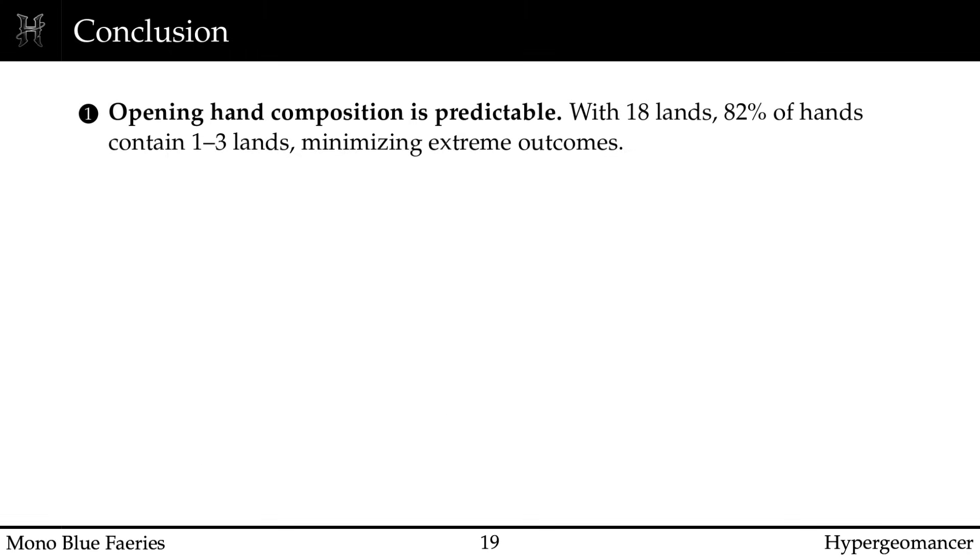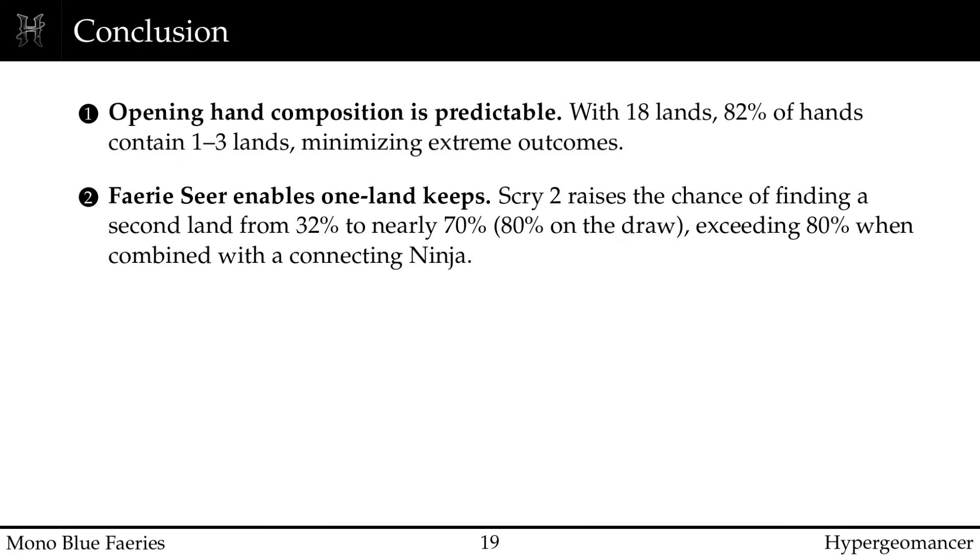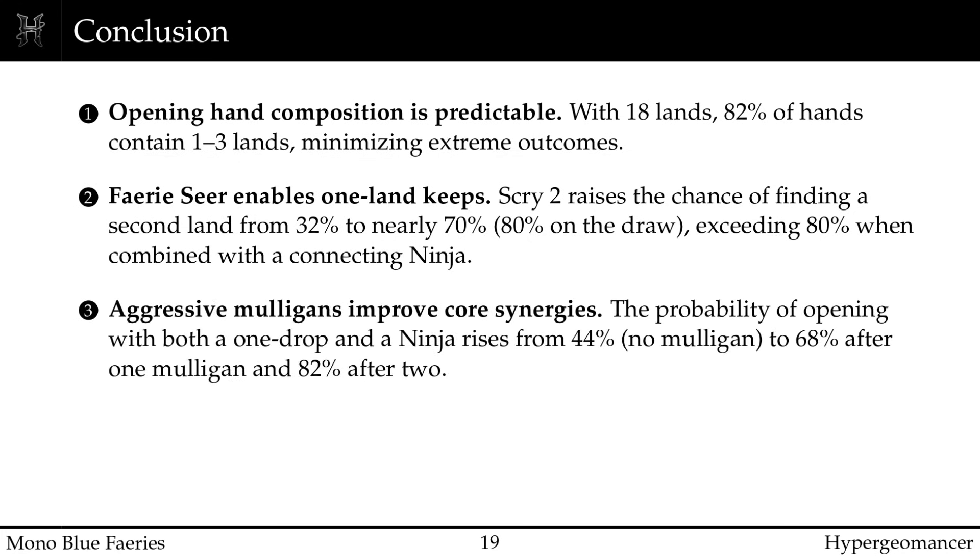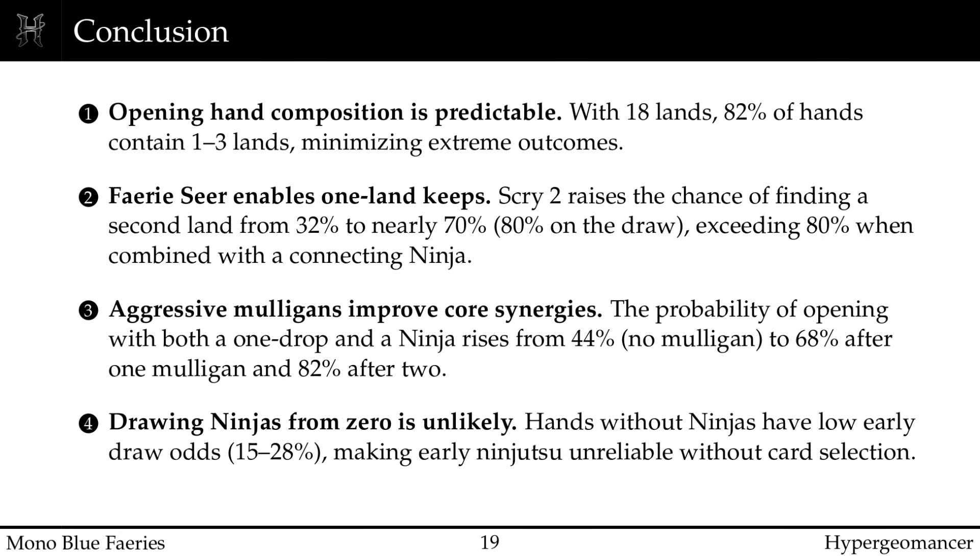Let's bring everything together. We've established that 18 lands provides optimal balance, giving you playable hands while minimizing extreme outcomes. We've seen that 16 to 18 one-drops maximizes consistency without sacrificing your interaction suite. We've learned that 1 land hands aren't the trap they seem, if they contain Faerie Seer. The scry 2 ability transforms a 32% gamble into a 70% probability of finding your second land on the play and 80% on the draw. We've discovered that the core combination, one-drop plus ninja, appears in only 44% of opening hands, making mulligan decisions strategically crucial. A single mulligan jumps you to 68%, 2 mulligans get you to 82%. The cost of one fewer card is far outweighed by having the right tools to execute your strategy. We've also learned that hands with no ninjas need a very strong reason to be kept, with less than a 50% chance of finding a ninja by turn 3, even with card selection you are hoping, not planning.